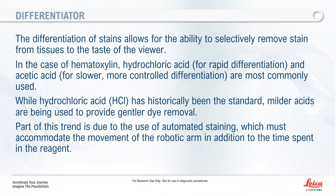The differentiator allows you to selectively remove stain from tissues to get the coloration you're comfortable with. Hydrochloric acid was historically used — it's a very rapid differentiator. Acetic acid or citric acid are mild acids providing much more controlled differentiation, and these are now commonly seen in laboratories. As automated staining instruments have become more common, the trend has moved toward milder acids for gentler dye removal.